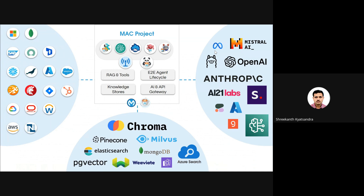On the left-hand side of this slide you can see all the enterprise applications you can connect to using MuleSoft connectors, and also bring all this data to your AI agents. Below you can see all the vector databases you can connect using the MAC vector connectors. On the right-hand side you can see all the LLM providers which your AI applications can talk to using Einstein AI and other connectors.